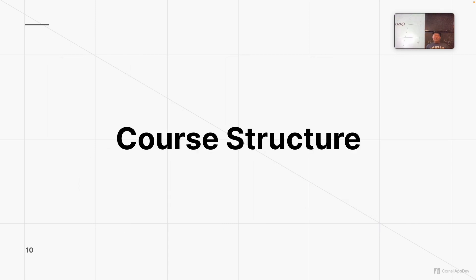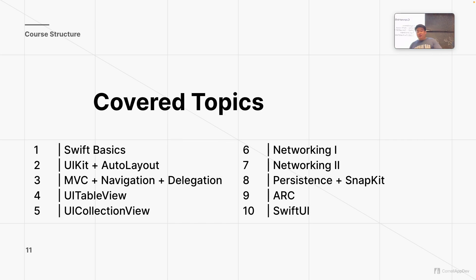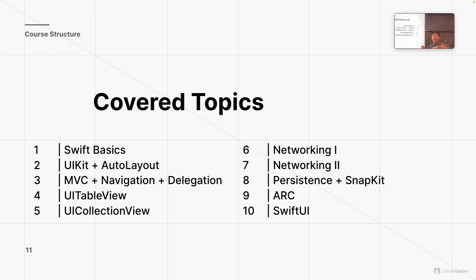Now let's dive into how the course is going to be structured. This iOS course will be taught in the UIKit framework. Starting off, we'll learn Swift basics, not really focusing on UIKit in the beginning. We'll also do a Git workshop where you'll learn to use GitHub and navigate GitHub Enterprise. Then we'll dive into creating, constraining, and laying out views and how to navigate and delegate between them — that's lectures 3 through 5. Lecture 6 shifts into networking and back-end integration through lecture 7. Later on we'll introduce persistence, SnapKit, ARC, and at the end of the semester we'll introduce SwiftUI.